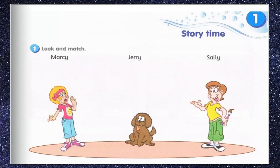Let's look at activity one, task number one: Look and match. Now, do you still remember the three of them? You will have to match who is Marcy, who is Jerry, and who is Sally. Try to match it now. Then we're going to discuss the answer later.